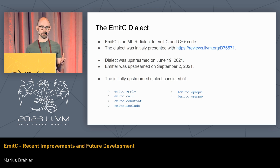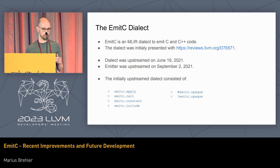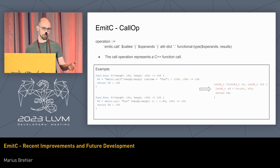What you do is you have the EmitC dialect, and that is passed to the CPP emitter, which actually generates the C or C++ code for you. When we initially upstreamed it, the dialect consisted of an apply, a call, a constant, and include operation, and we had an opaque type as well as an opaque attribute — not really much. The most important operation for us was the call operation, which essentially represents a C++ function call. You can also pass template arguments to it, and for example, you have the EmitC call foo, which gives you the C++ code you see on the right-hand side.